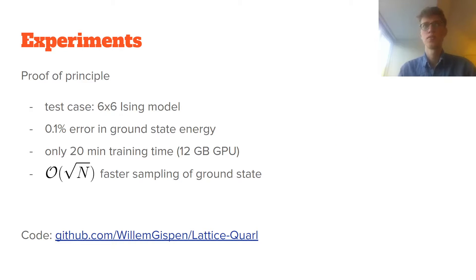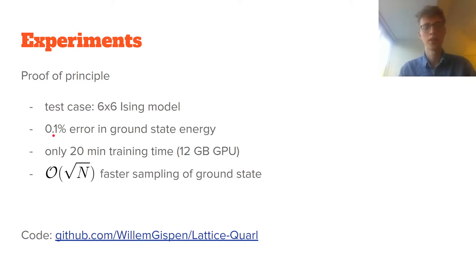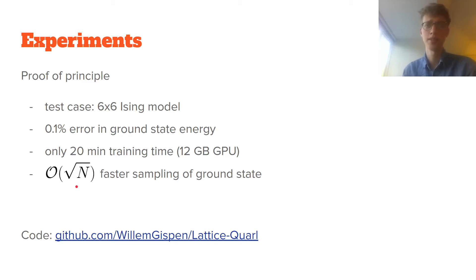In our experiments with a 6×6 Ising model, we obtained roughly 0.1% error in the ground state energy using just 20 minutes of training time. While not yet state-of-the-art, this demonstrates the method works in practice. More notably, the learned policy provides a speedup of order √n in sampling the ground state probability distribution, where n is the number of particles.